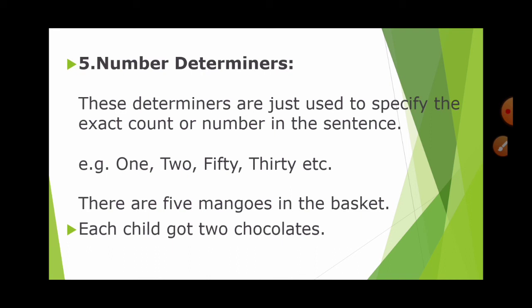Unlike quantifiers, number determinants specify the exact count or number in a sentence. Examples are: one, two, thirty, fifty. For example, 'There are five mangoes in the basket' or 'Each child got two chocolates.'